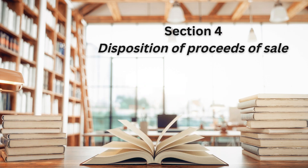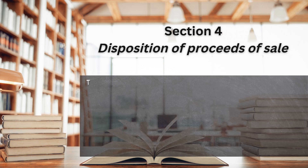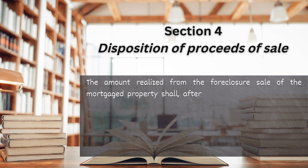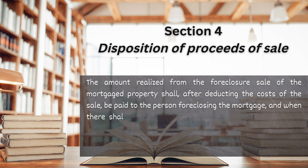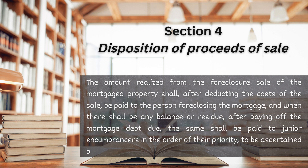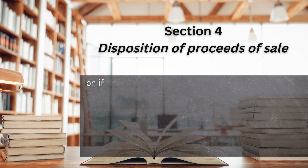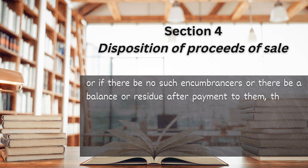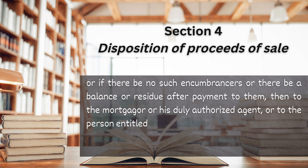The said purchaser or last redemptioner may secure a writ of possession upon motion from the court which ordered the foreclosure. Section 4. Disposition of Proceeds of Sale. The amount realized from the foreclosure sale of the mortgaged property shall, after deducting the costs of the sale, be paid to the person foreclosing the mortgage, and when there shall be any balance or residue after paying off the mortgage debt due, the same shall be paid to junior encumbrances in the order of their priority to be ascertained by the court, or if there be no such encumbrances, or there be a balance or residue after payment to them, then to the mortgagor or his duly authorized agent, or to the person entitled to it.